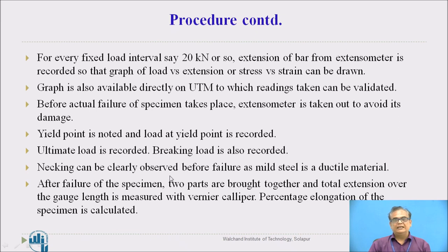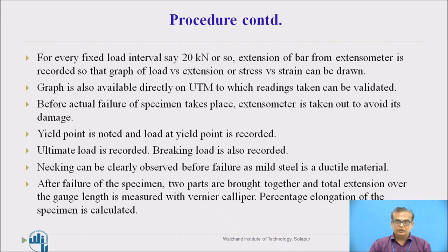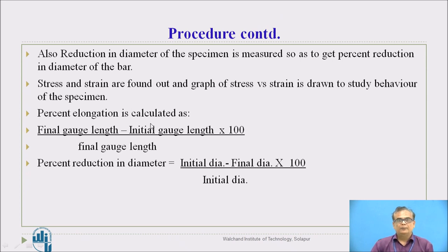Necking — a clear reduction in diameter — can be seen before failure in mild steel, as it is a ductile material. The extensometer must be removed before this stage to avoid damage. After failure of the specimen, the two parts are brought together and the final gauge length and reduction in diameter at the failure point are measured.